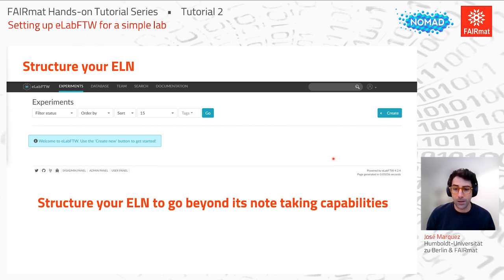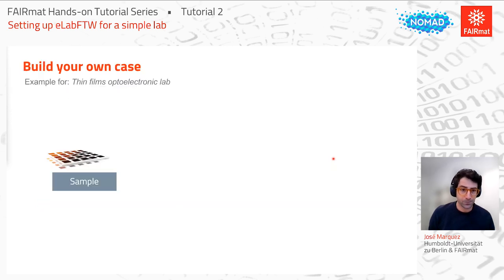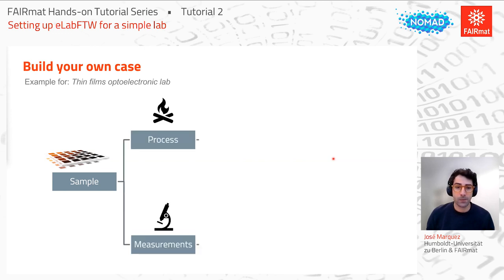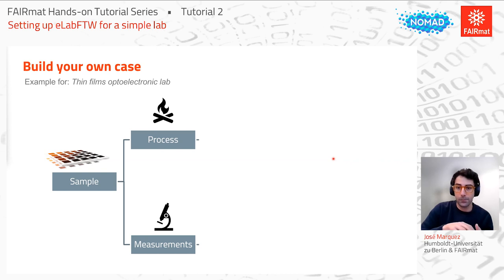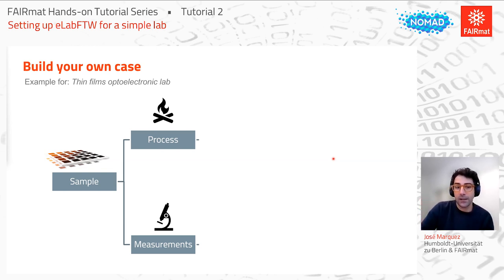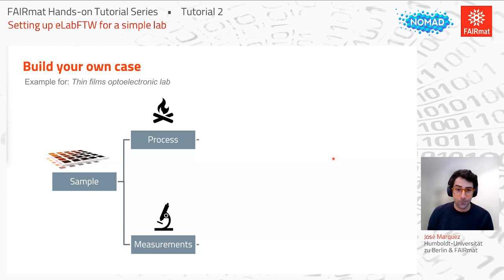I think it makes sense to work through an example from your own case. I come from a thin film optoelectronics lab, and I'll show an example from that context — I hope it serves as inspiration. In the type of lab I've been working in, we typically have samples which are thin films. We can deposit these thin films or do processes — for example, physical vapor deposition by evaporation, or simply heating the film in a furnace. Measurements are how we characterize the sample — X-ray diffraction, photoluminescence, or microscopy imaging.